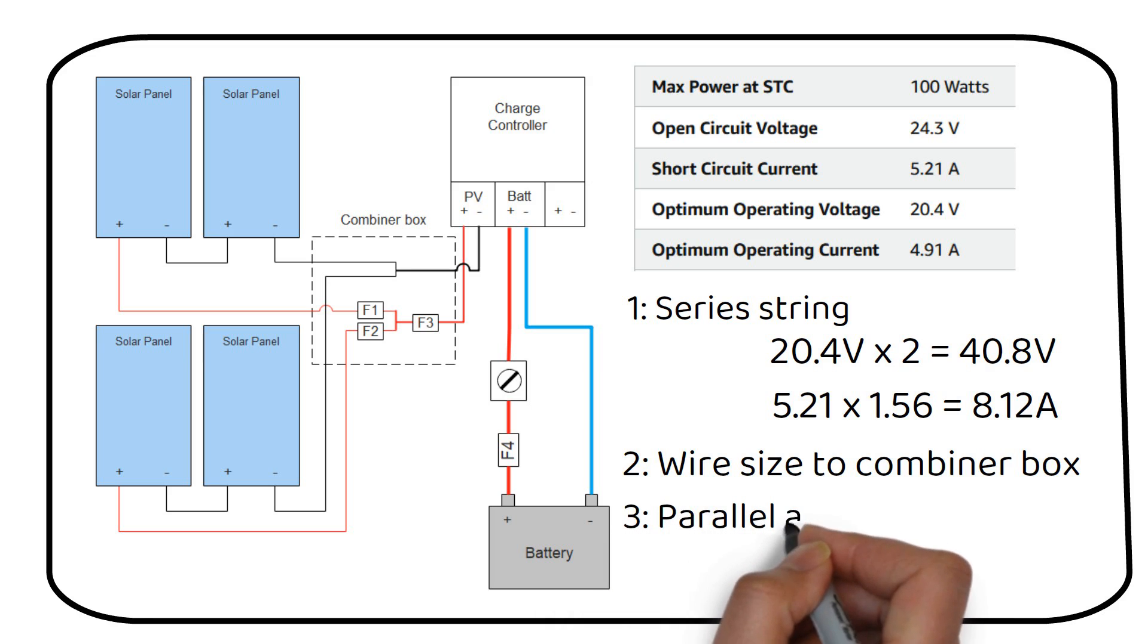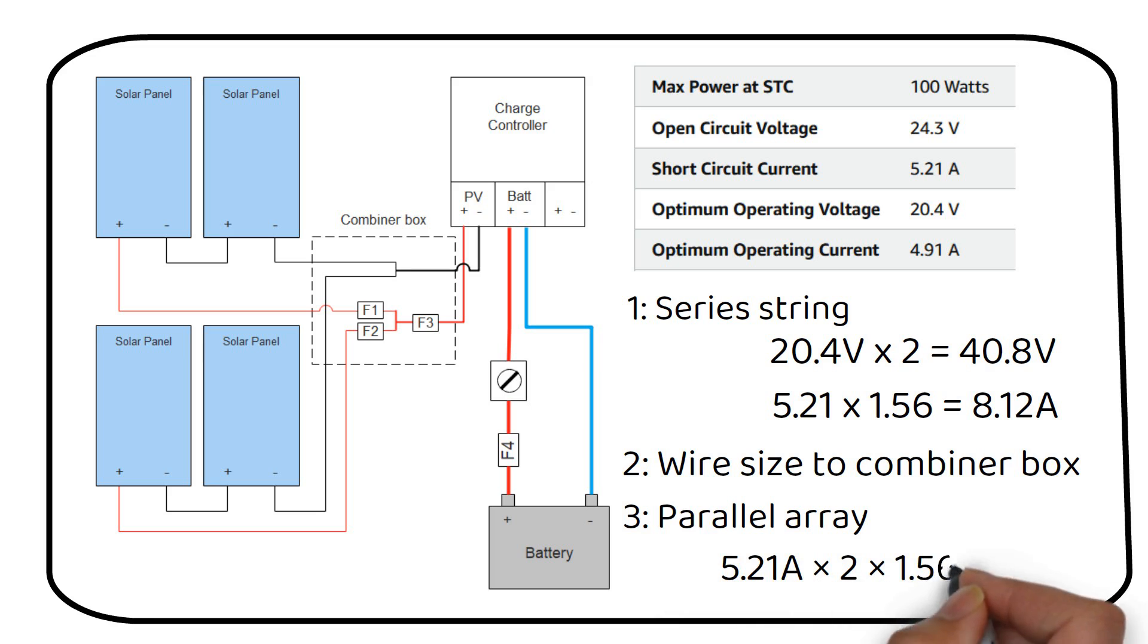Step 3: Combining two series strings in parallel. In parallel, current adds up. So for two strings, the current in the combiner box is doubled. This is the formula to calculate the current when the two series strings are combined. We get a total of 16.25 amps.